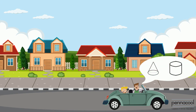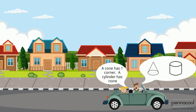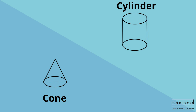Next, they looked at the difference between cones and cylinders. Jadon answers easily, saying the cone has one vertex while the cylinder has none. Then his dad asks him to decide which has more faces. After thinking for some time, Jadon says he thinks they have the same number of faces.